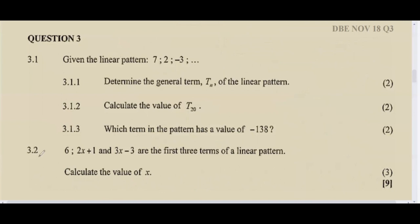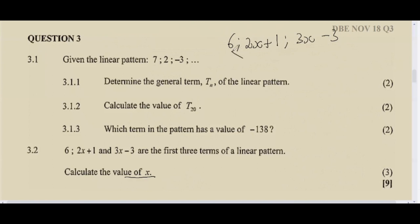Question 3.2: 6, (2x + 1), and (3x − 3) are the first three terms of a linear pattern. Calculate the value of x. These are common questions — don't be afraid. You use the same principle: take the second term minus the first term, then the third term minus the second term. So t2 − t1 = (2x + 1) − 6 = 2x − 5.